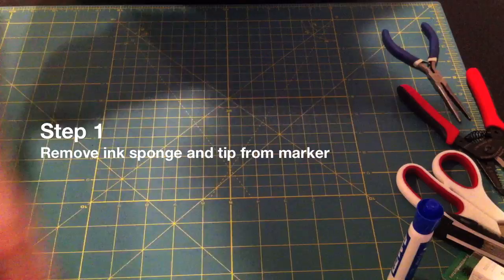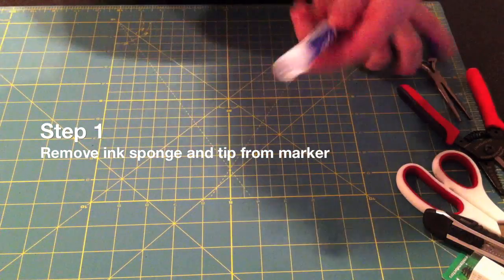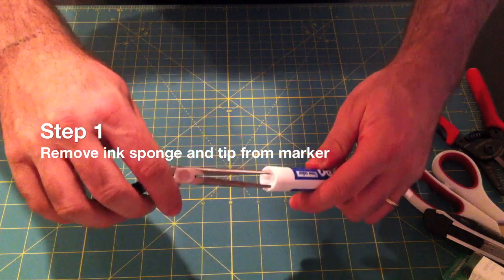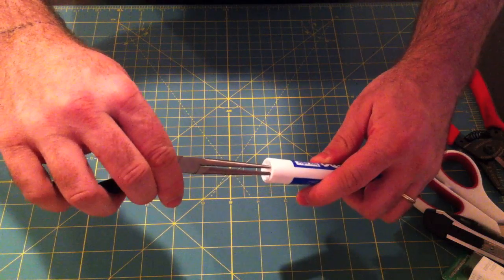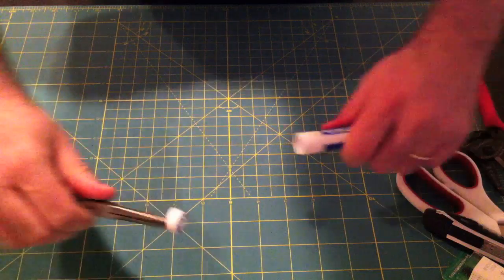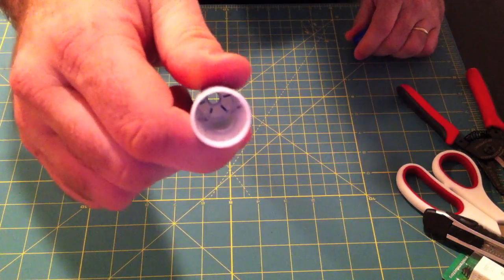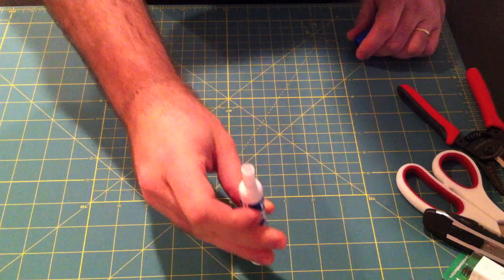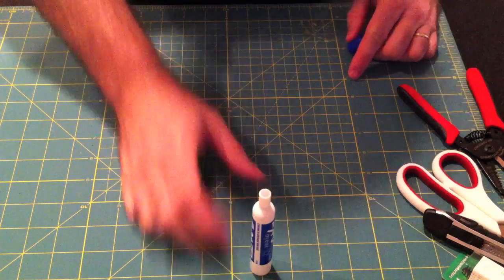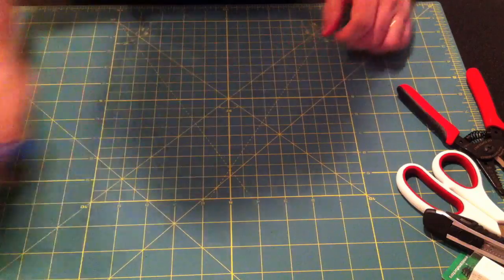So for step one, we're just going to start off by getting the ink sponge out of the marker. Just use some pliers to pull off the back, it should fall right out, as you can see I've already taken mine apart. And in order to get the tip out, this is where the hammer comes in handy, you can just bang on it straight down until it falls out.